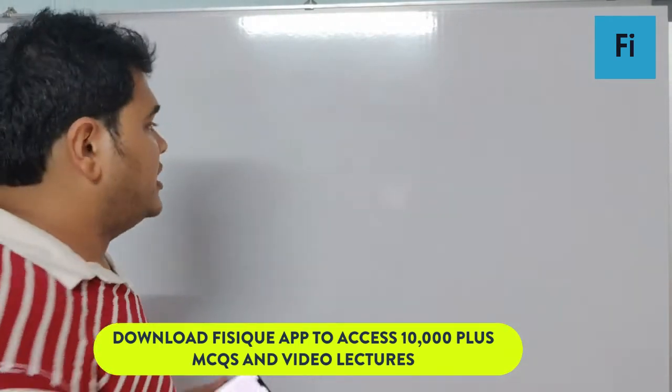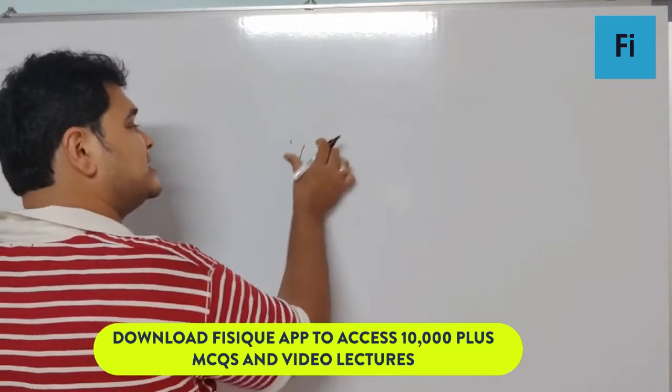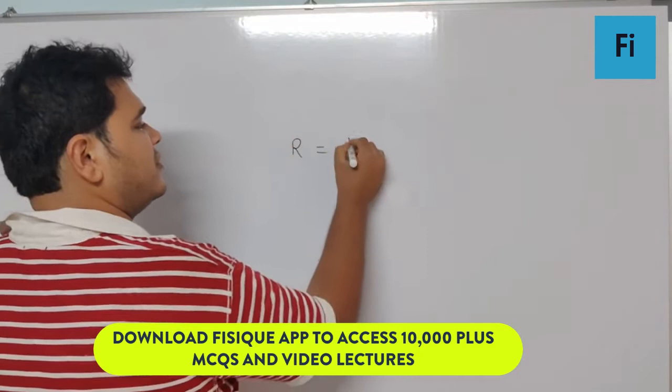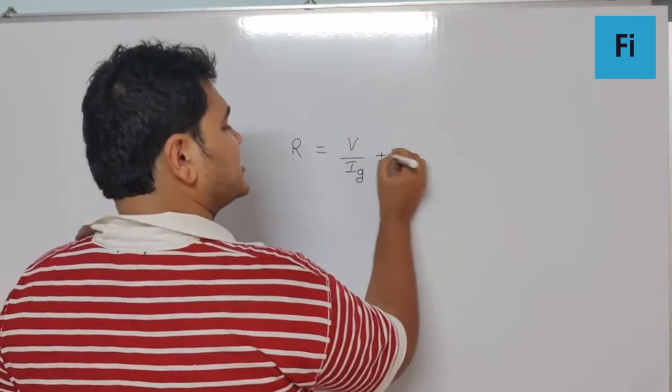Yes guys, the range V is basically calculated using the formula R is equal to V by Ig plus G.